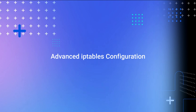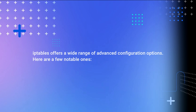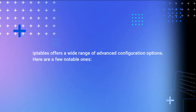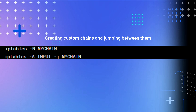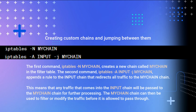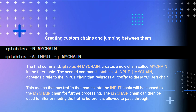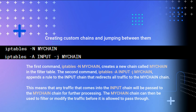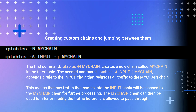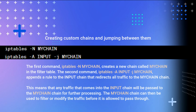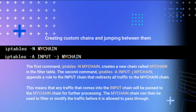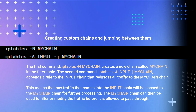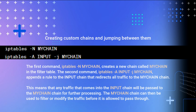Advanced IP Tables Configuration. IP Tables offers a wide range of advanced configuration options. Creating Custom Chains and Jumping Between Them: the first command 'iptables -N MyChain' creates a new chain called MyChain in the filter table. The second command 'iptables -A INPUT -j MyChain' appends a rule to the input chain that redirects all traffic to MyChain for further processing. The MyChain chain can then be used to filter or modify the traffic before it is allowed to pass through.